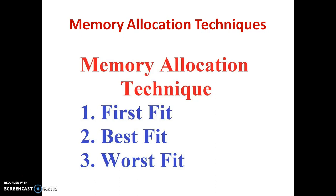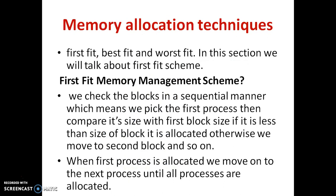The memory allocation techniques are first fit, best fit, and worst fit. For first fit: by the name, it checks blocks in a sequential manner. We pick up the first process, compare its size with the first block size — if the process size is less than or equal to the block size it is allocated; otherwise we move to the second block and continue until all process requests are allocated in the given order.